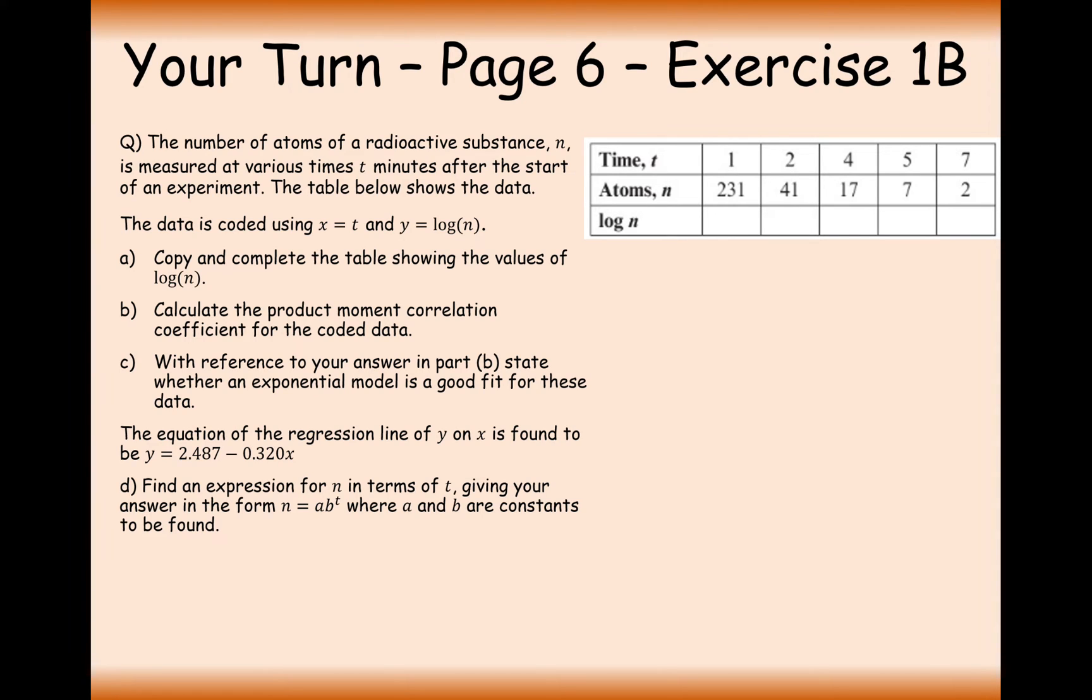Your turn to have a go at this question. This question requires you to do a little bit more. It requires you to turn a set of non-linear data into a linear set of data by logging the amount of atoms after a certain amount of time. So pause the video and try this question out. The number of atoms of a radioactive substance N is measured at various times T after the start of an experiment. The data is coded using X equals T and Y equals log of N. Copy and complete the table showing the values of log N. So we need to do log of 231, which is 2.36, log of 41 is 1.61, log of 17 is 1.23, log of 7 is 0.85, and log of 2 is 0.30.